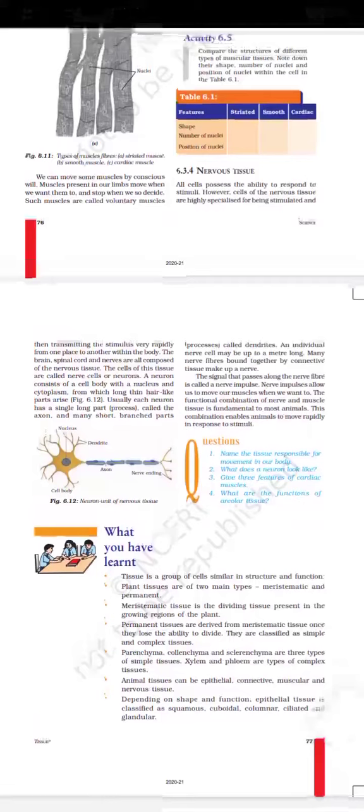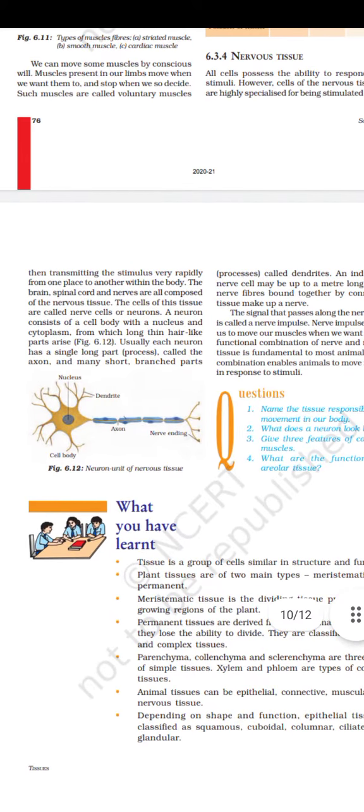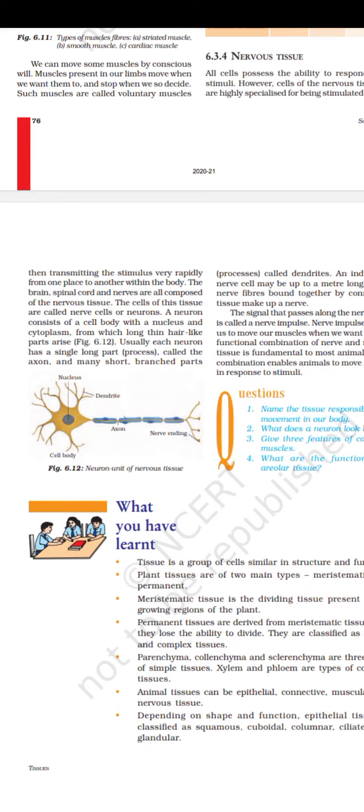The cells of this tissue are nerve cells known as neurons. A neuron consists of a cell body, a dendrite, and an axon.